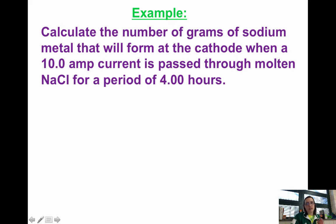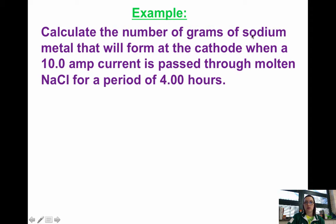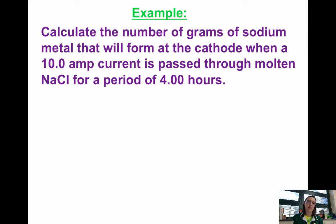Let's look at an example: calculate the number of grams of sodium metal that will form at the cathode when 10 amps of current is passed through molten NaCl for four hours. Being at the cathode means the process is reduction, so sodium ions are being reduced to sodium metal. We have time (four hours) and current (10 amps). The first step is to find the number of coulombs using charge equals current times time — but since amps is coulombs per second, we need to convert hours to seconds first.